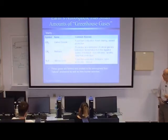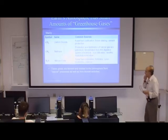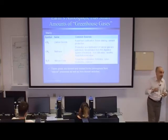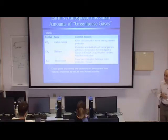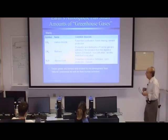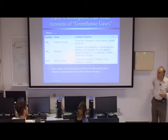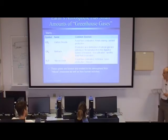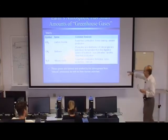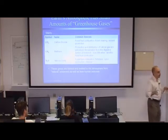The major greenhouse gases are carbon dioxide, methane, and nitrous oxides. Carbon dioxide arises naturally any time there are fires or combustion of carbon-bearing materials, including biomass, wood, and more recently fossil fuels like oil, coal, and natural gas. Methane also arises through various natural sources, and nitrous oxides as well. These gases are formed and emitted to the atmosphere from both natural processes and increasingly from human activities.